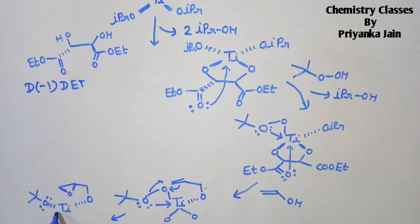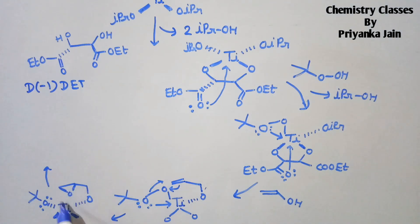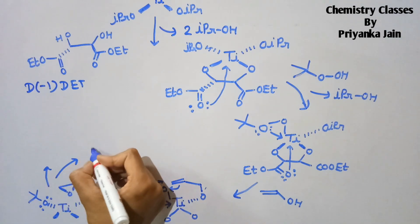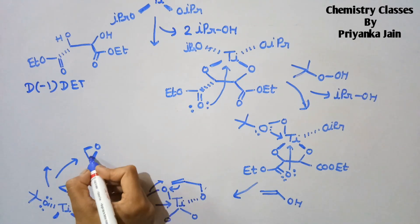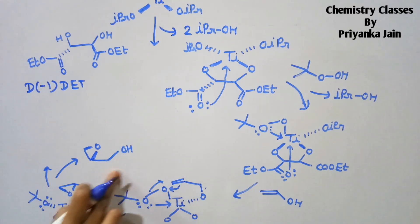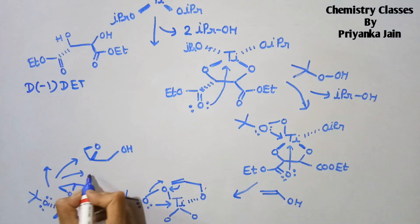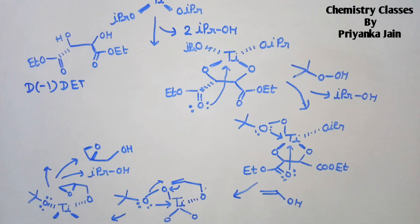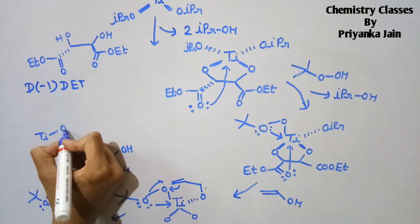The rest of the titanium complex remains as it is. There will be dissociation — this molecule leaves out. We are now getting the epoxide ring and the alcohol — we get the epoxy alcohol product. The isopropyl alcohol also leaves out.